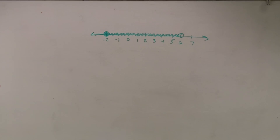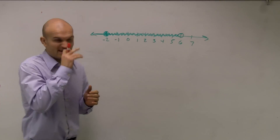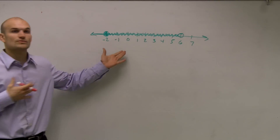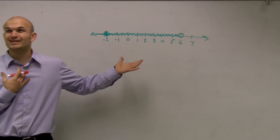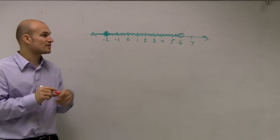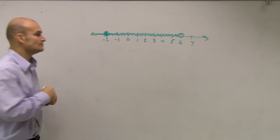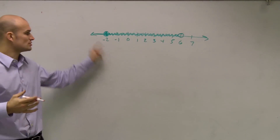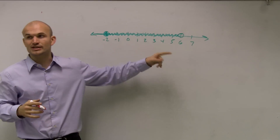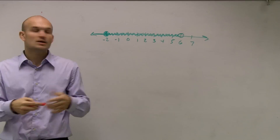For this problem, what we need to do is determine how to write the inequality from the graph. What we're given is a compound inequality, meaning our inequality has two different constraints. Remember, our values, or the shaded region, is what makes our inequality true.